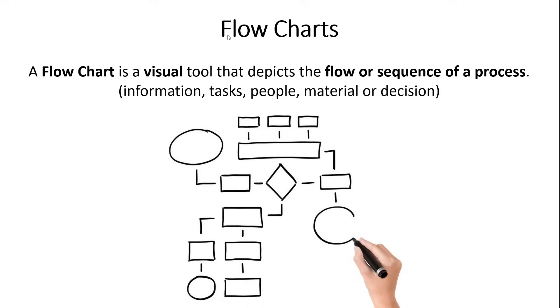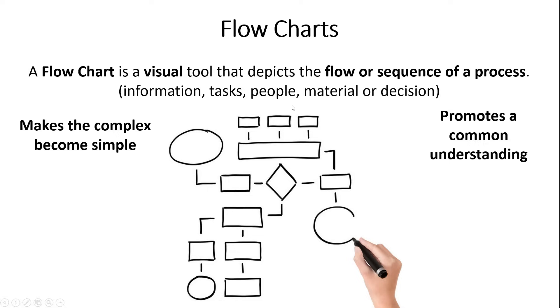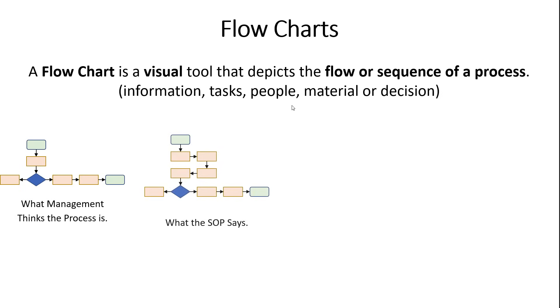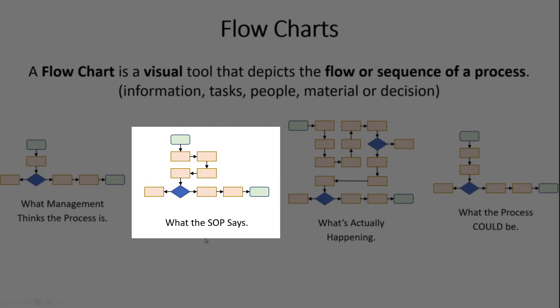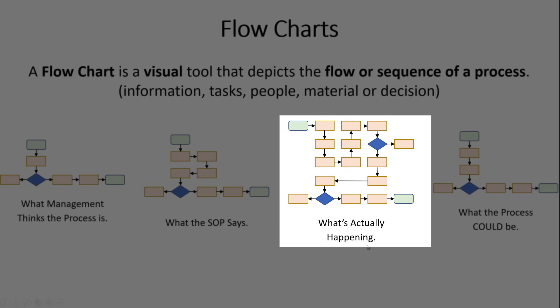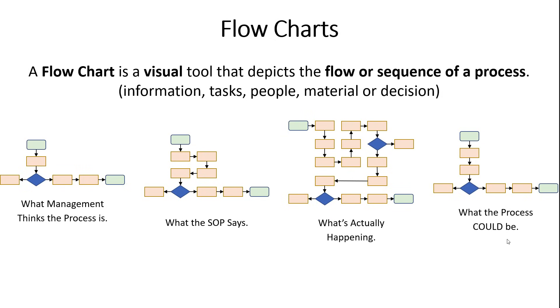The very first tool is the flow chart. A flow chart is a visual tool that helps you depict the flow or the sequence of a process. This could be things like the flow of information or tasks or material or people or decisions. The reason that a flow chart is so incredibly valuable is it makes a really complex process simple, and it promotes a common understanding of a process.